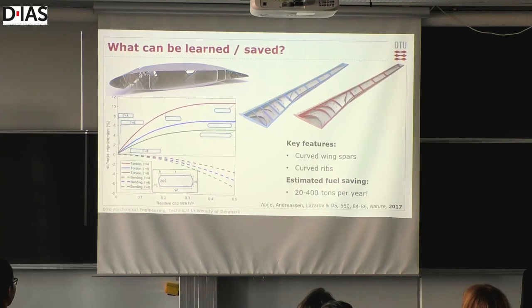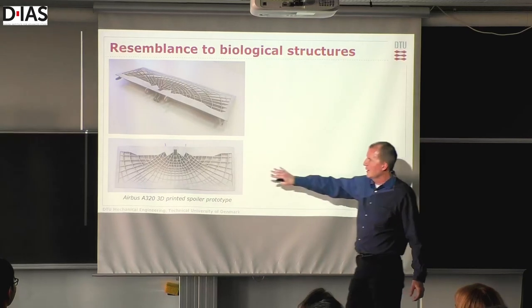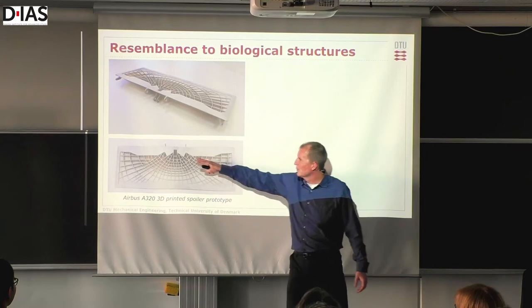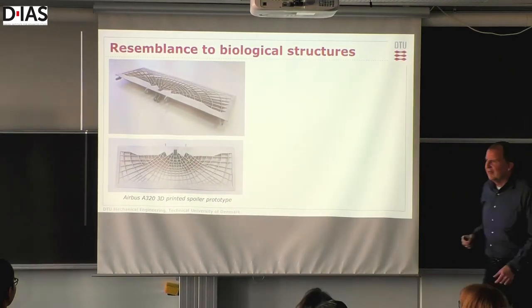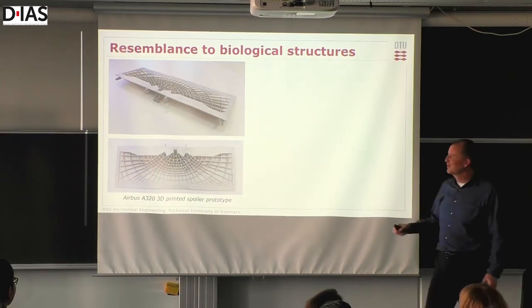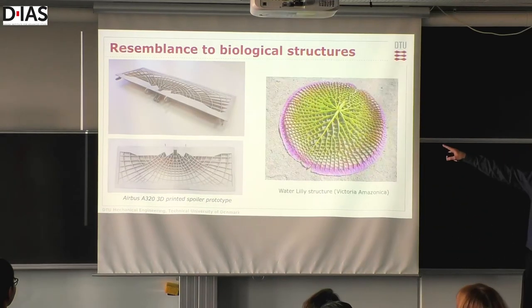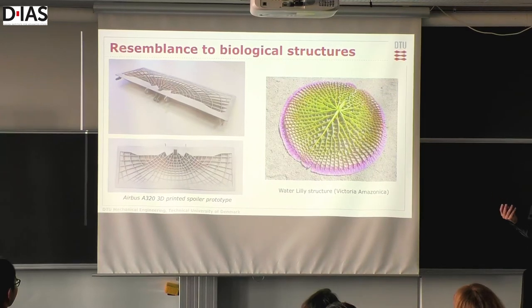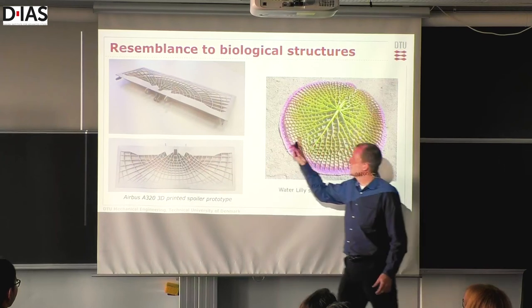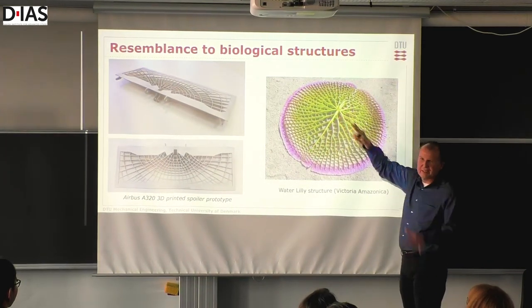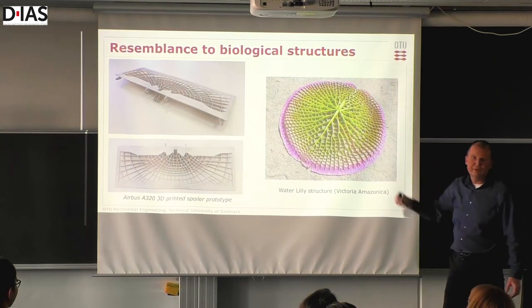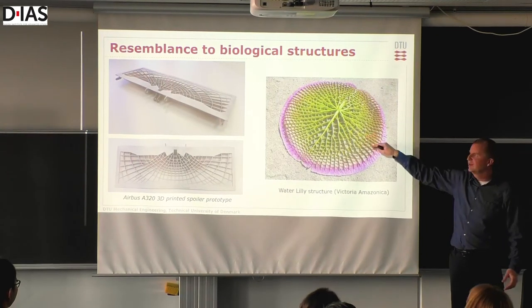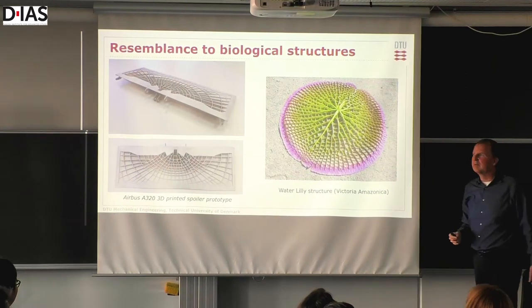These structures look quite natural. Airbus is doing experiments on flaps where they also get these nice natural-looking structures. Some biologists might think they've seen that in nature — this is the water lily structure, and it looks almost exactly like that. But it's always a little bit dangerous to make a one-to-one analysis: this is a dead structure, the water lily is a live structure, optimizing not only stiffness but also nutrition transport. You cannot just take nature-appearing structures and make them into airplanes and expect them to be optimal — we need the optimization still.